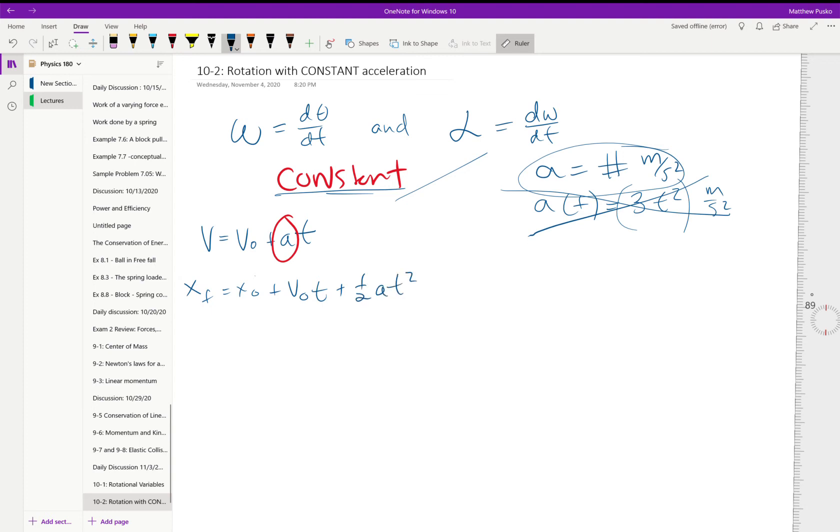And we also had the non-time dependent v squared is equal to v naught squared plus two times the constant acceleration, all these are constant, times the change in position, right?